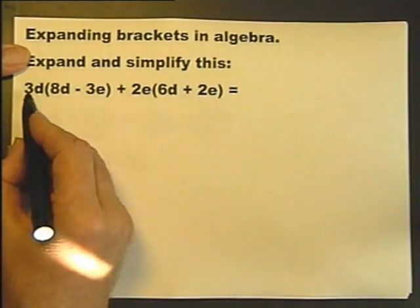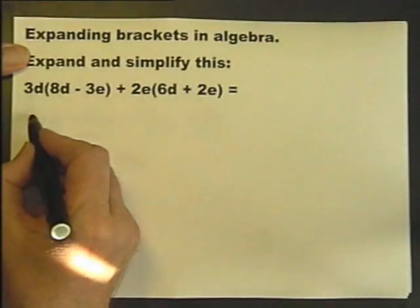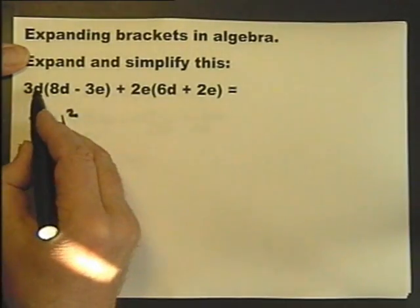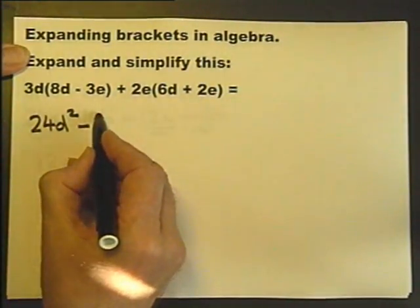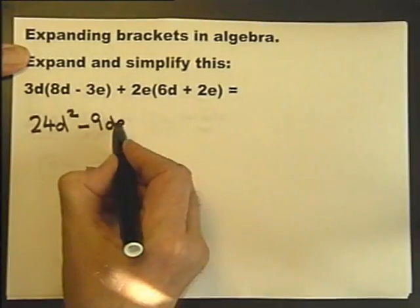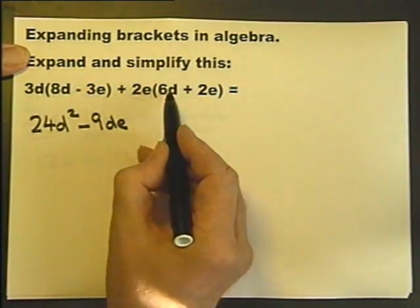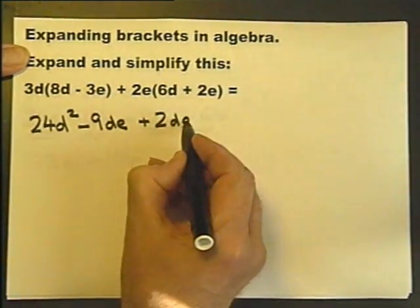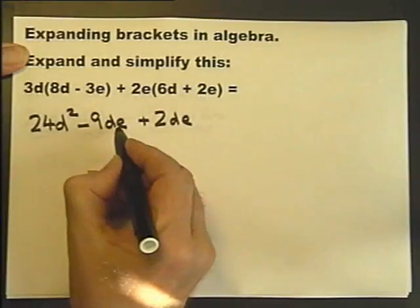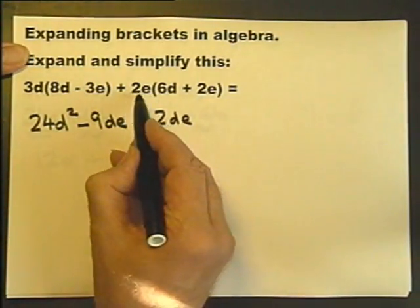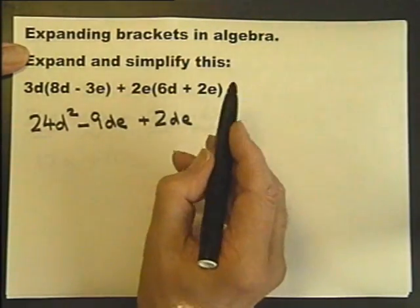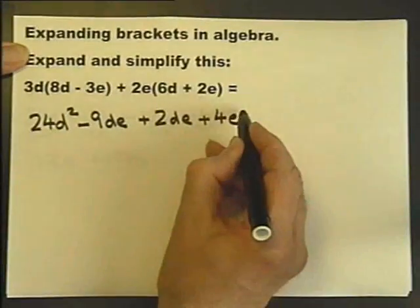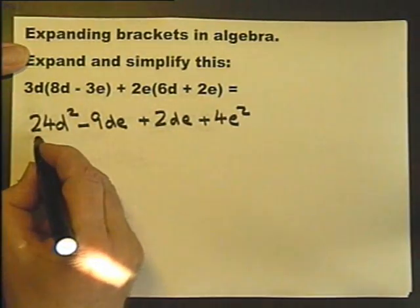And the last one. 3D times 8D is 24, and D times D is D squared. 3D times minus 3E is minus 9DE. Plus 2E times plus 6D is plus 12ED or DE. You can write it round either way. Best to write it round the same way as that one. And then 2E times 2E or more precisely plus 2E times plus 2E is plus 4E squared.